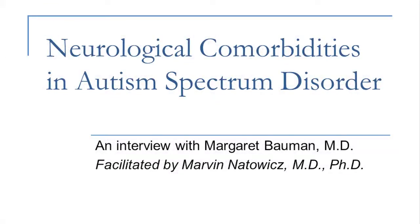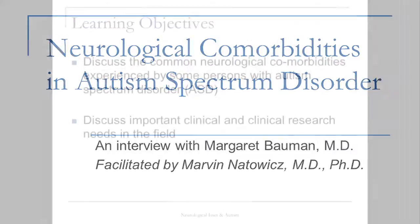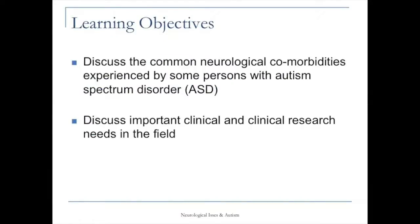I'm pleased today to be with Dr. Margaret Bauman, a renowned expert, clinician and researcher on developmental disabilities in children and adults with special expertise in autism. Dr. Bauman is going to be discussing neurological and developmental issues in individuals with autism spectrum disorder. She has been involved for most of her career at Harvard Medical School and Massachusetts General Hospital, directed a clinic called LADRS, and is currently associated with Boston University School of Medicine seeing patients at the Integrated Center for Child Development. I'm Marvin Natovich, a staff physician at the Cleveland Clinic.